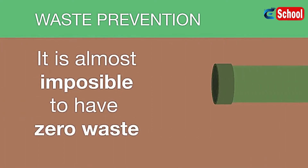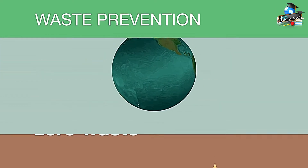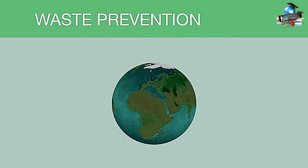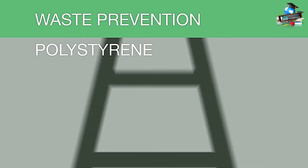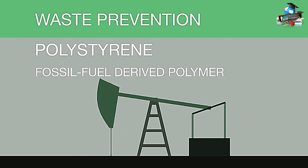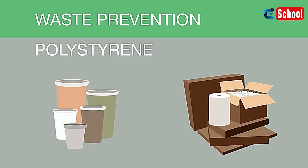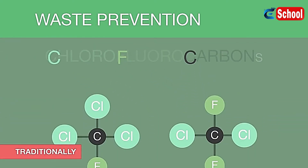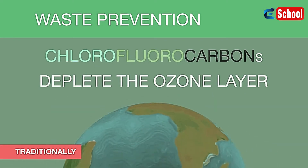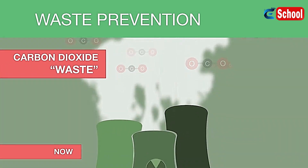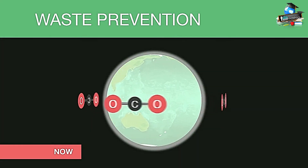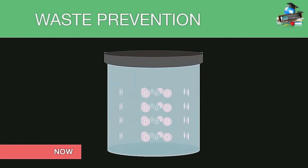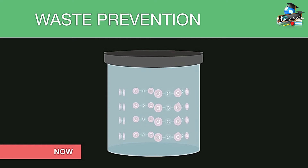Now this is almost impossible — to have zero waste for any given chemical reaction. But on a global scale, the beauty of this principle is that it can be applied to almost every single chemical reaction conducted. For example, polystyrene is a fossil fuel-derived polymer used to make disposable cups and packaging materials. The polymer needs to be expanded before it can be used in packaging. Traditionally this was done with CFCs or chlorofluorocarbons, which deplete the ozone layer. Now this is done with carbon dioxide waste from other industrial processes. Instead of releasing carbon dioxide into the atmosphere and contributing to the greenhouse effect, it is contained and used to expand polystyrene, so there is no additional carbon dioxide being released into the atmosphere.